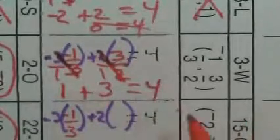Next, x is negative 1 third and y is 3 over 2. The 3s cancel — and negative times a negative is positive — so that part becomes 1. Then 2 goes into 2, leaving 3. Does 1 plus 3 equal 4? Yes. So go down to box 3 and put a W.